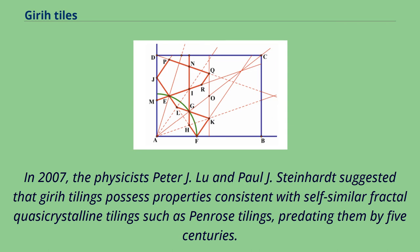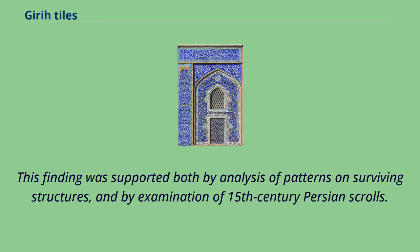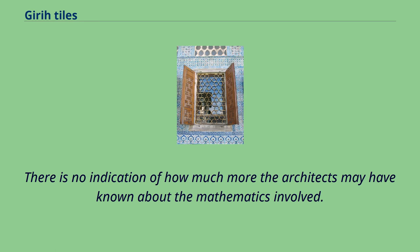In 2007, physicists Peter J. Lu and Paul J. Steinhardt suggested that girih tilings possess properties consistent with self-similar fractal quasi-crystalline tilings such as Penrose tilings, predating them by five centuries. This finding was supported both by analysis of patterns on surviving structures and by examination of 15th century Persian scrolls.